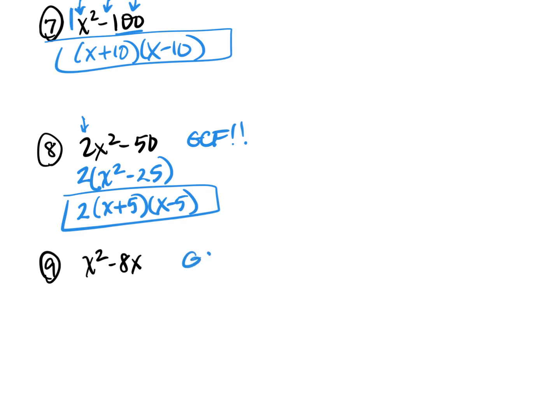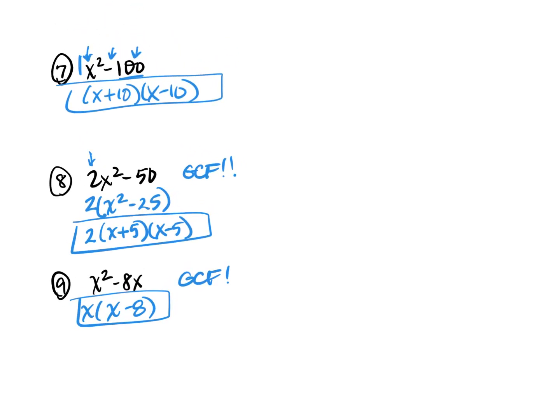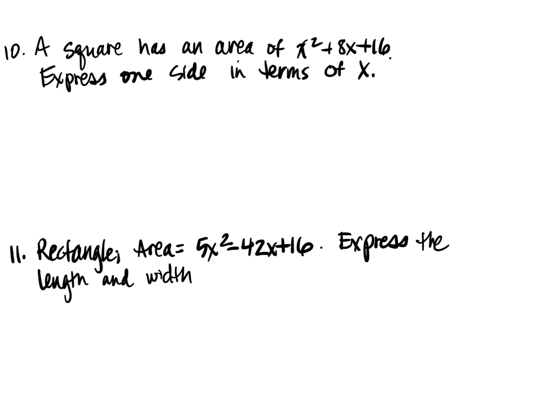Number 9, again, check GCF. I can take an x out of both terms. That gives me x(x - 8). And then it's completely factored. That's all I had to do on that. So when you're factoring, always start with GCF and then look at these tricks that I've shown you. Now, a couple more types of questions I want to go over with you.